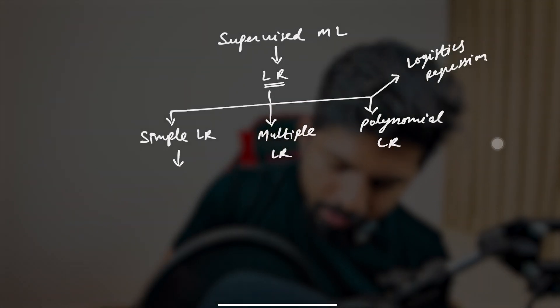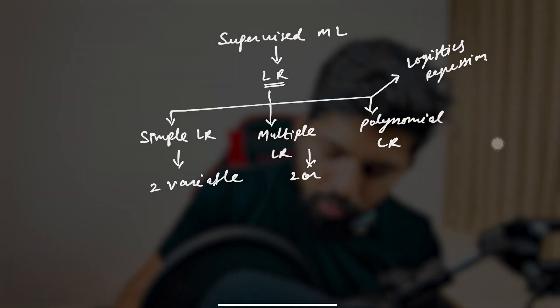In simple linear regression we try to find the relation between only two variables — one dependent variable, such as the change in stock prices, and one independent variable, such as index, RSI, standard deviation, or moving average. In multiple linear regression it is more than two variables — the output is one dependent variable (the change in stock prices) and the input has multiple independent variables: the index, market sentiment, RSI, moving average, and standard deviation.